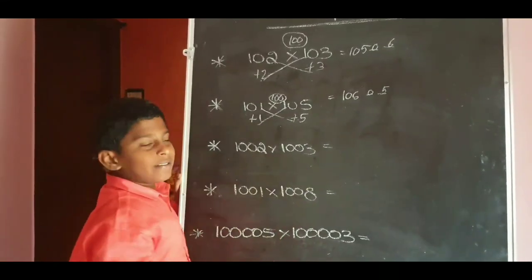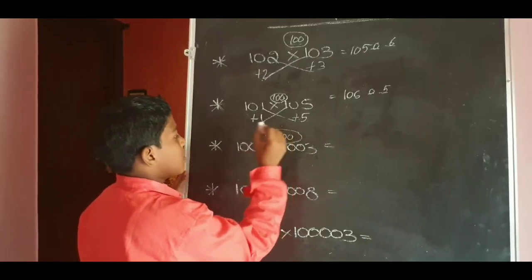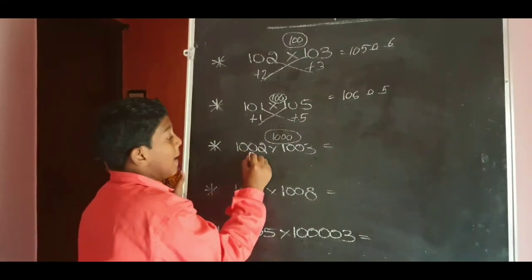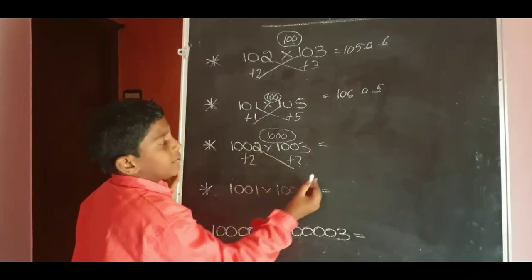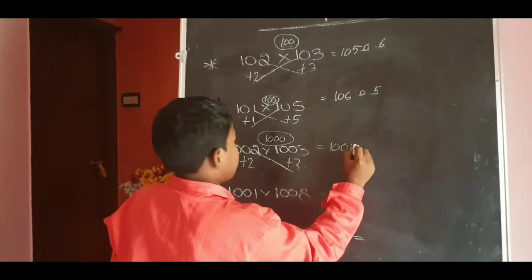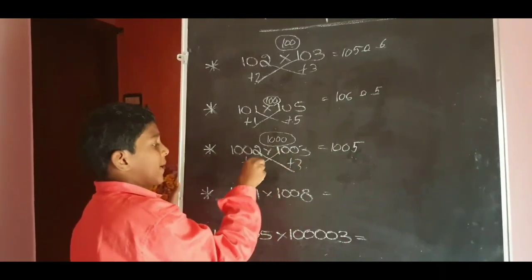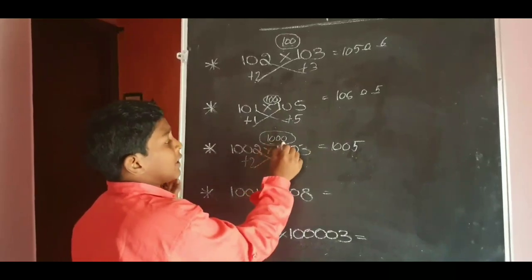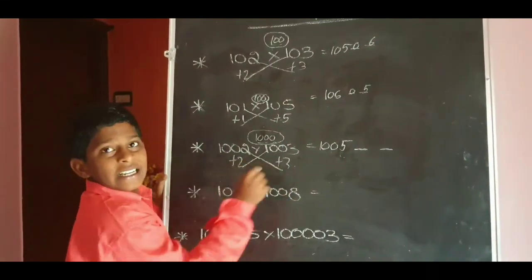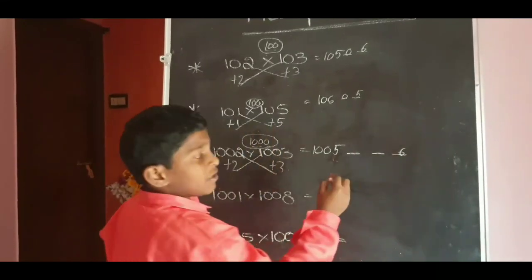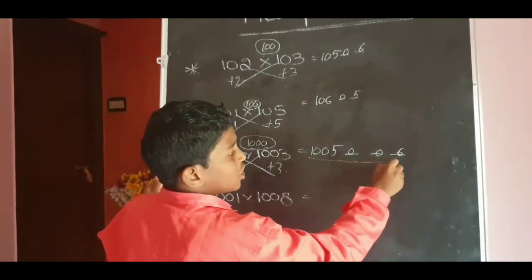Next: 1002 into 1003. This is nearest to 1000. For 1000, 1002 plus 2; for 1000, 1003 plus 3. 1002 plus 3 equals 1005. 1003 plus 2 equals 1005. For 1000, three zeros means still three digits. 2 into 3 equals 6, means 006. The answer is 1005006.